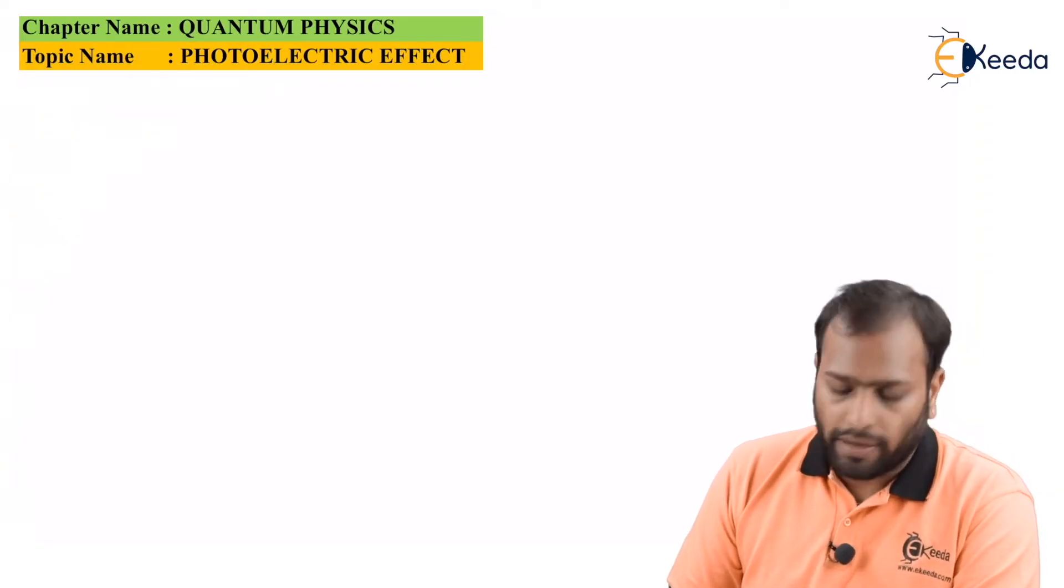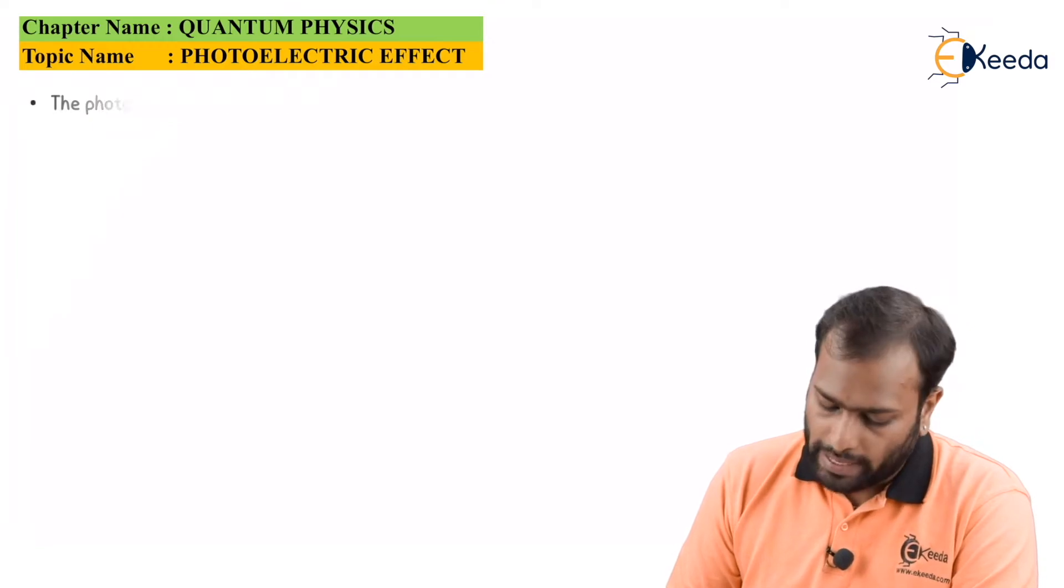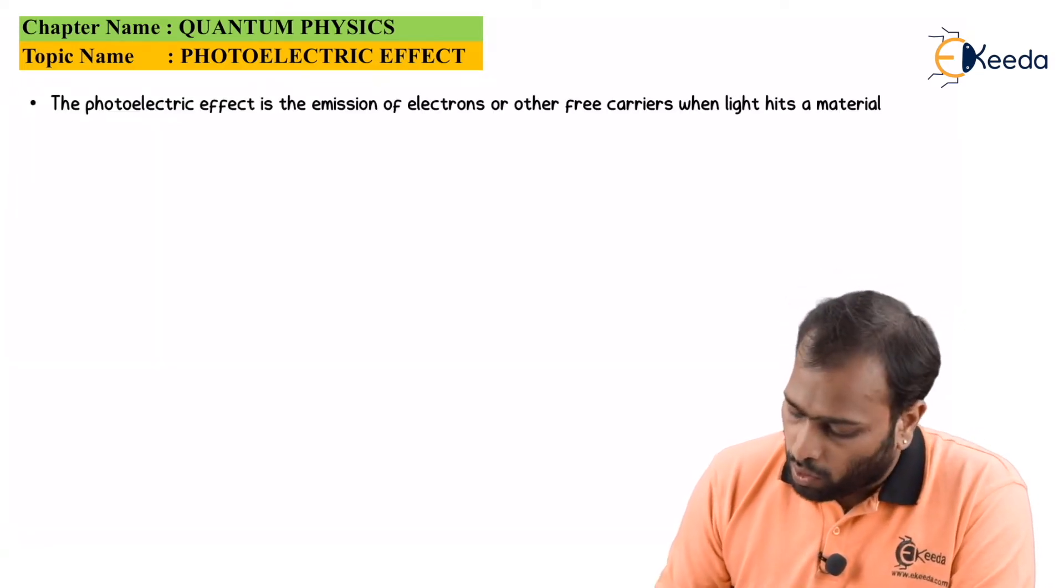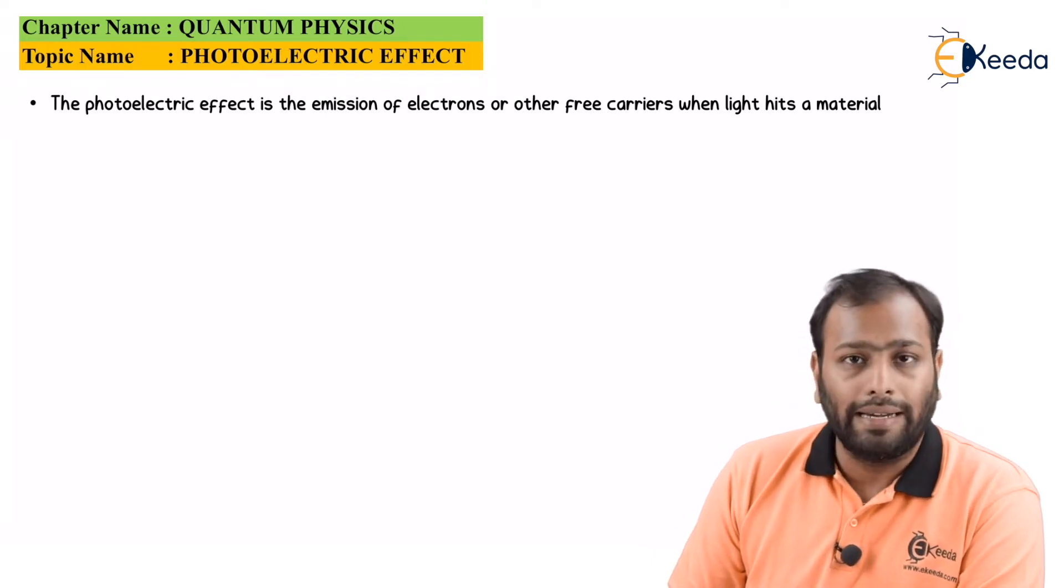As you can see, photoelectric effect's definition reads out to be: the photoelectric effect is the emission of electrons or free carriers when light hits a material.